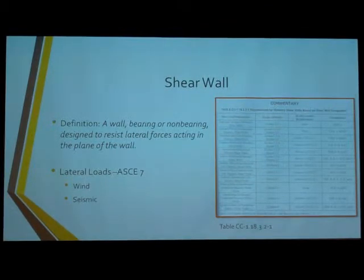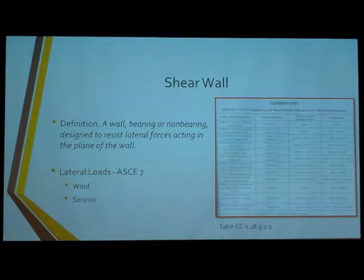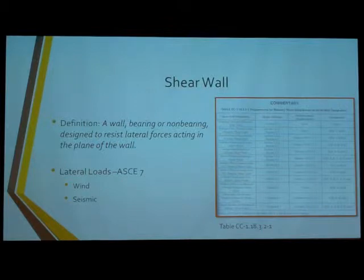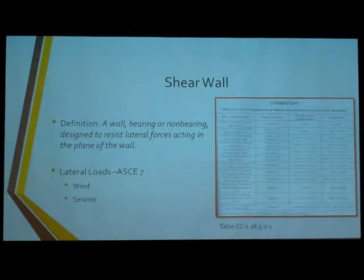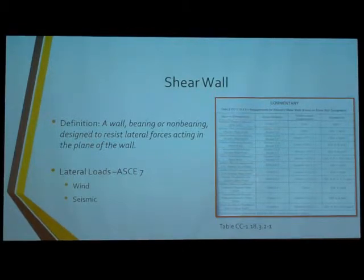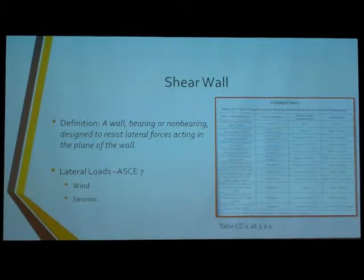Your loads are lateral loads of various kinds that you can get from your ASCE 7. This table from the masonry code, found at the beginning of it, is useful because depending on what type of shear wall and what method you want to use, it'll tell you where to look in the code book, making it easier to figure out the reinforcing requirements and other details.